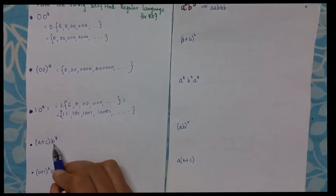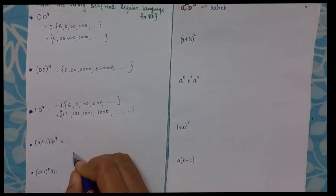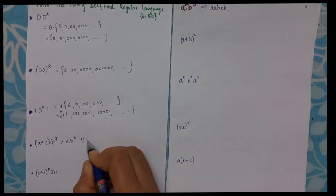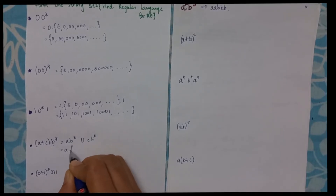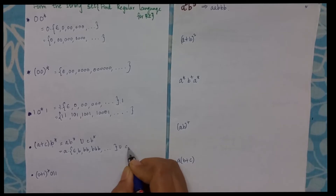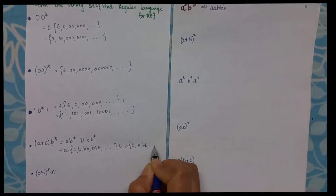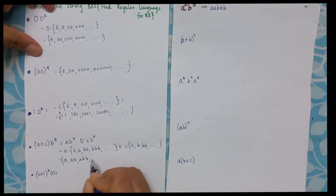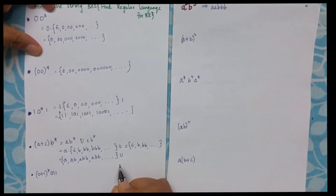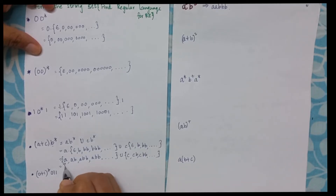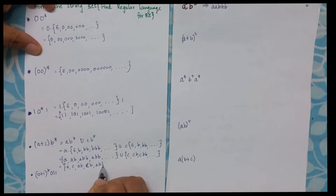Let us consider (A+C)B*. This expands as AB* union CB*. So it will have A, AB, ABB, ABBB, and so on, union C, CB, CBB, and so on. Combining everything I will get either A, C, AB, CB, ABB, CBB, and so on.